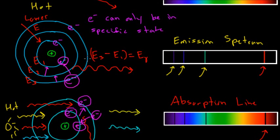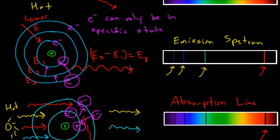In the last video, we looked at how different kinds of atoms can produce different spectra and different spectral line patterns, and they can be either emission spectra or absorption spectra. If we have a hot gas and all the electrons in that atom are in high energy states, as those electrons fall to lower energy states, they'll send out beams of light with very specific energies and wavelengths, and those wavelengths will exactly correspond to the colors of this emission spectra.